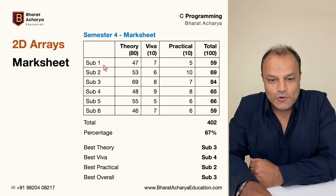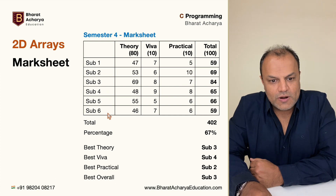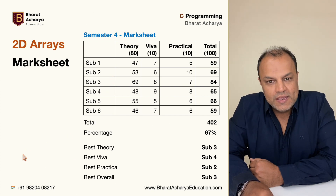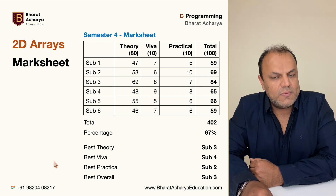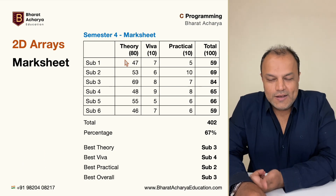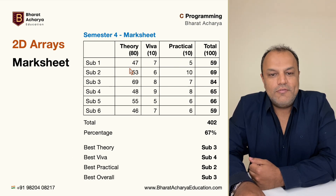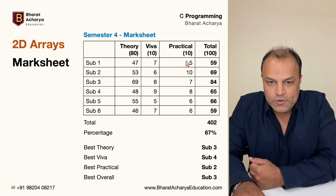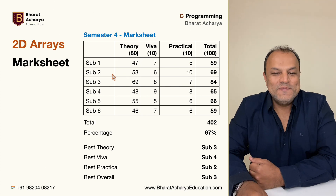Here is how it goes. These are your subjects. You may have the subject titles or you may have subject 1, 2, 3, 4 and just have a key at the bottom saying subject 1 is microprocessor, subject 2 is C programming and so on, whatever your names of the subjects are. Typical engineering mark sheet: your theory marks, your Viva marks, your practical marks and then your total. I have taken a distribution of 80, 10 and 10. You may distribute it the way you want. The calculations will change, the method won't change.